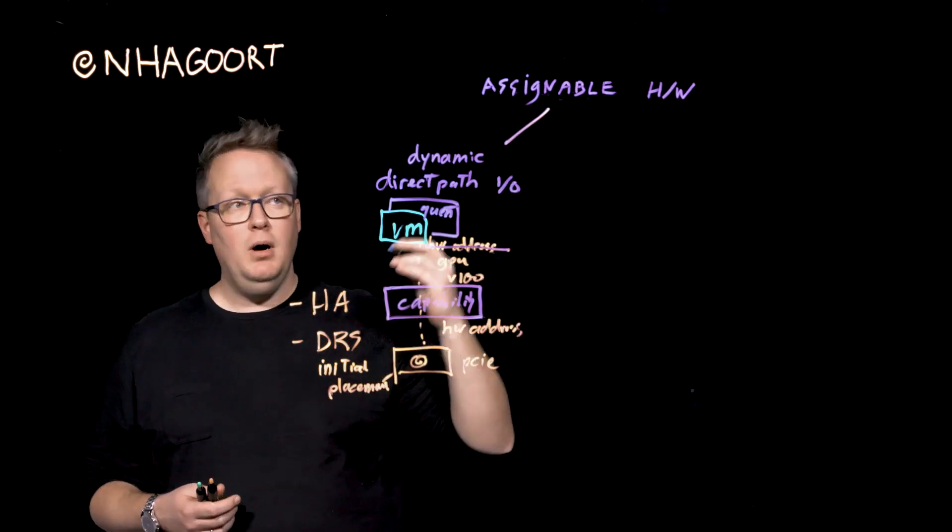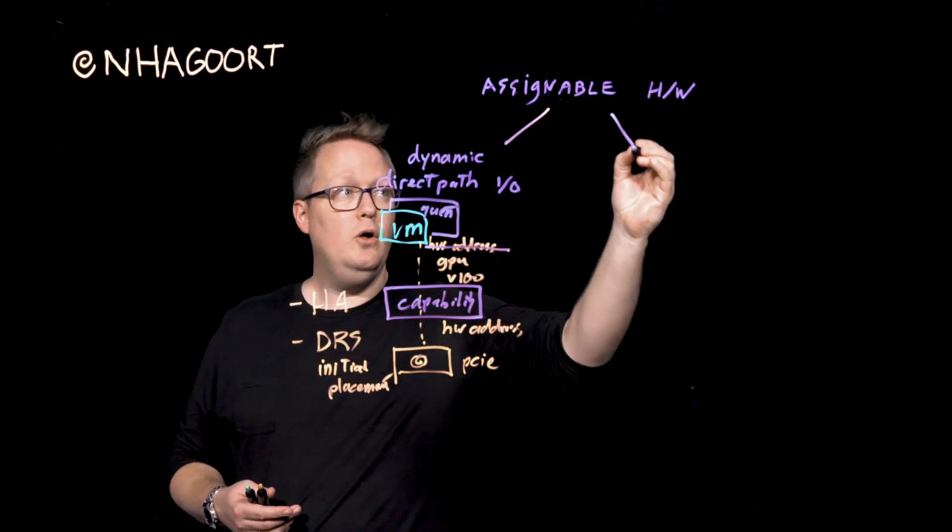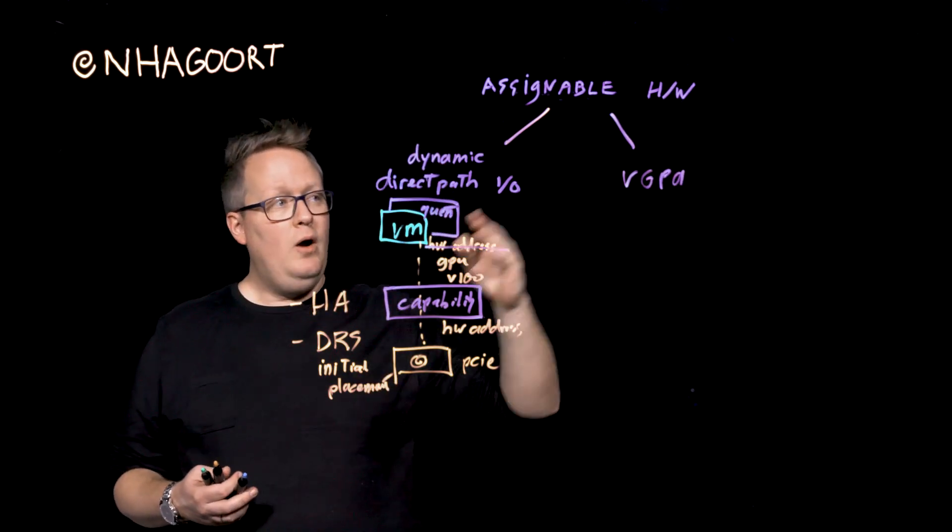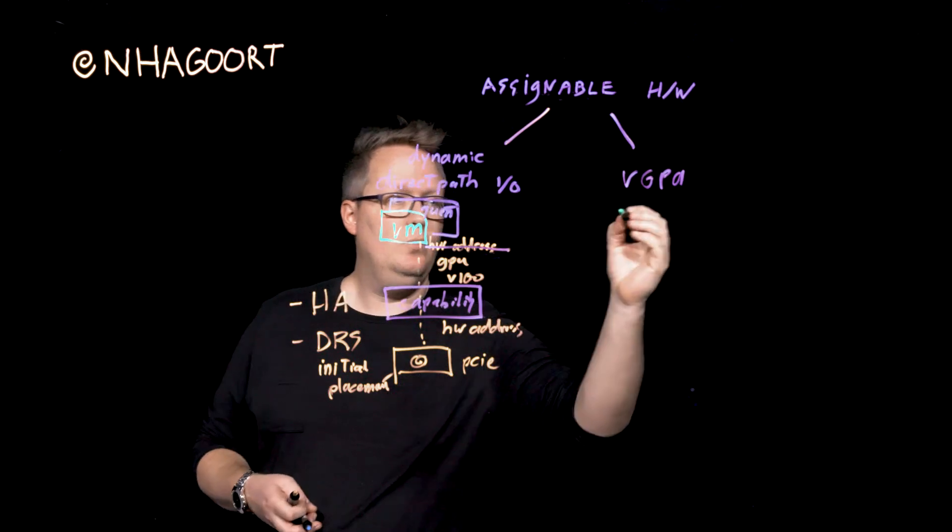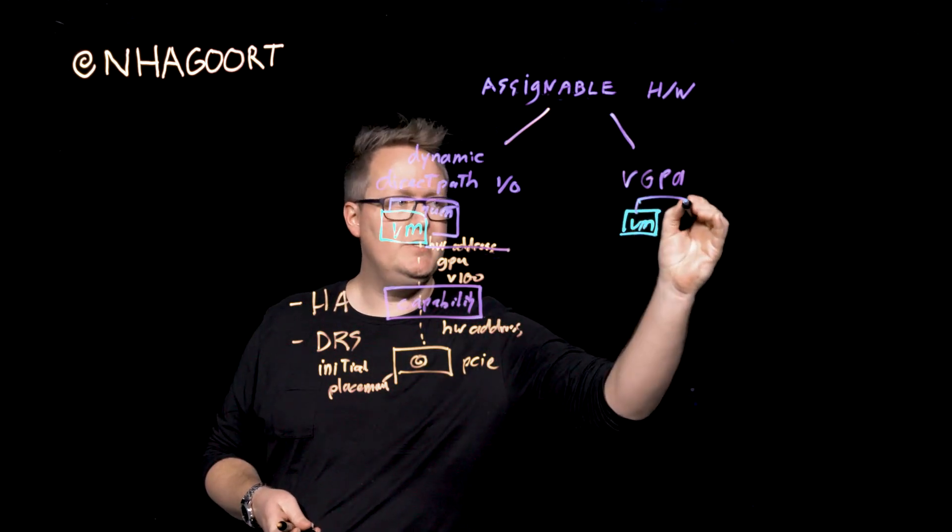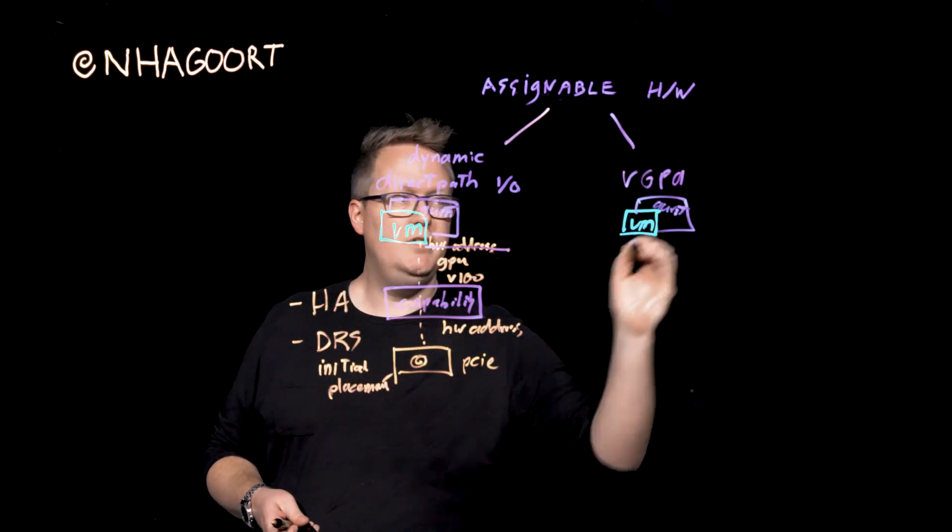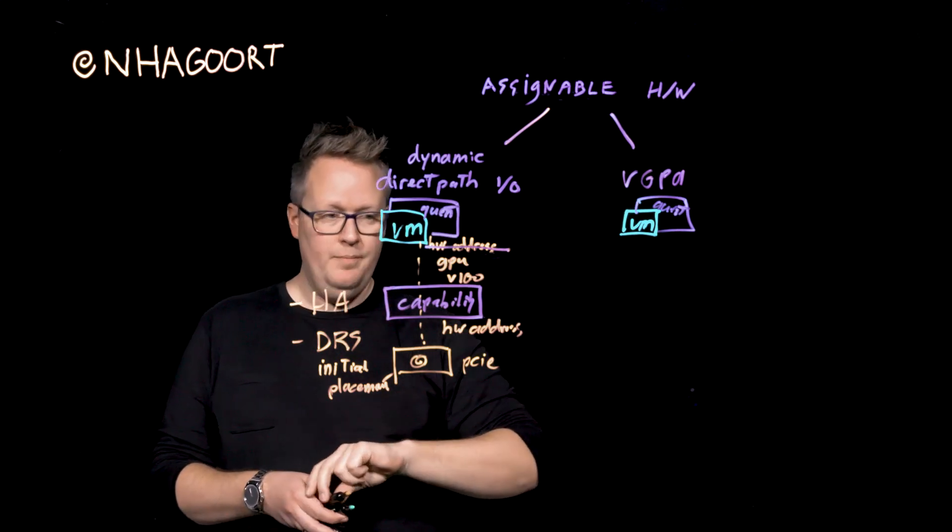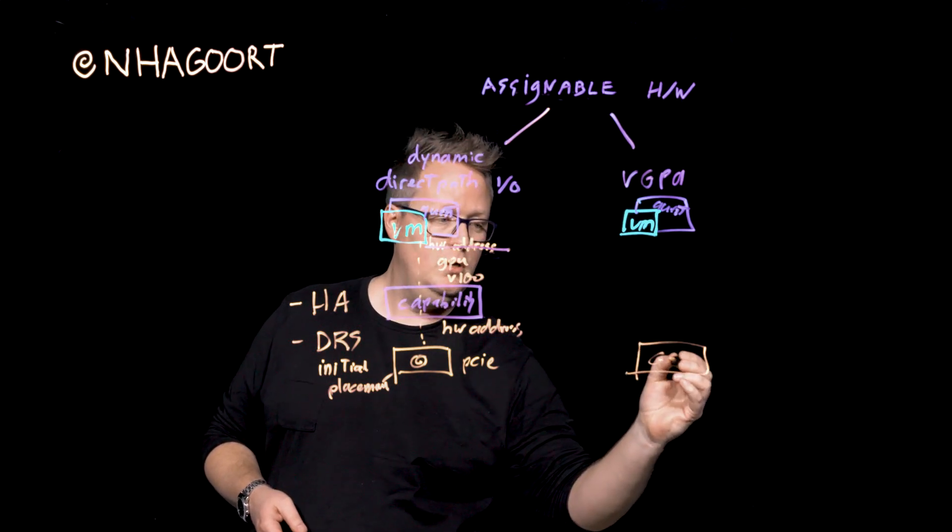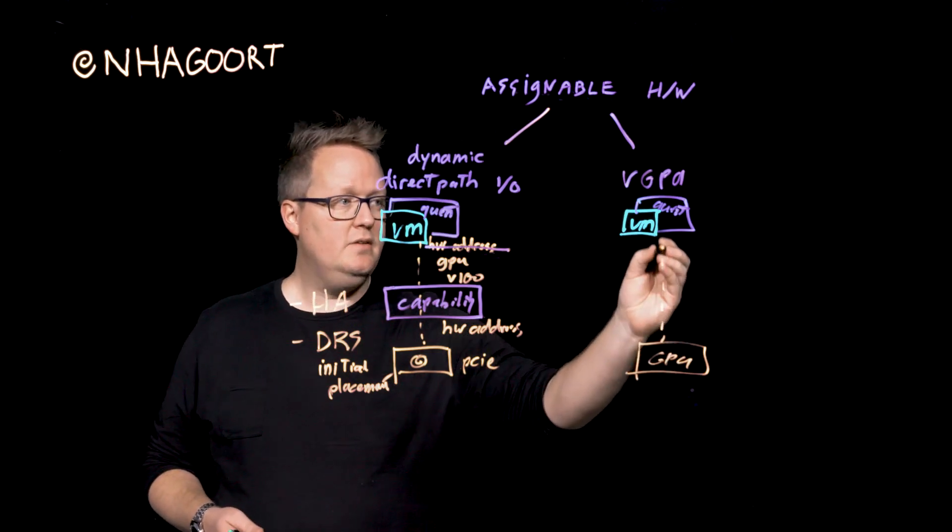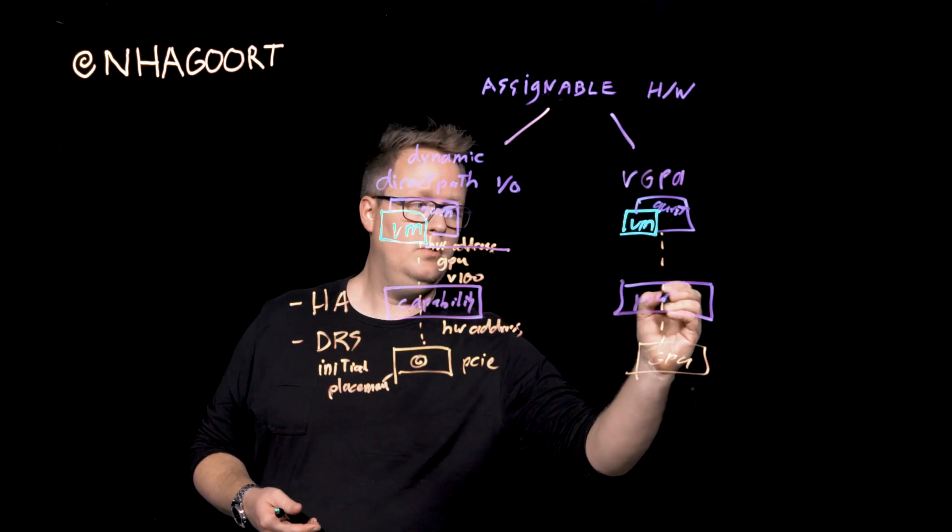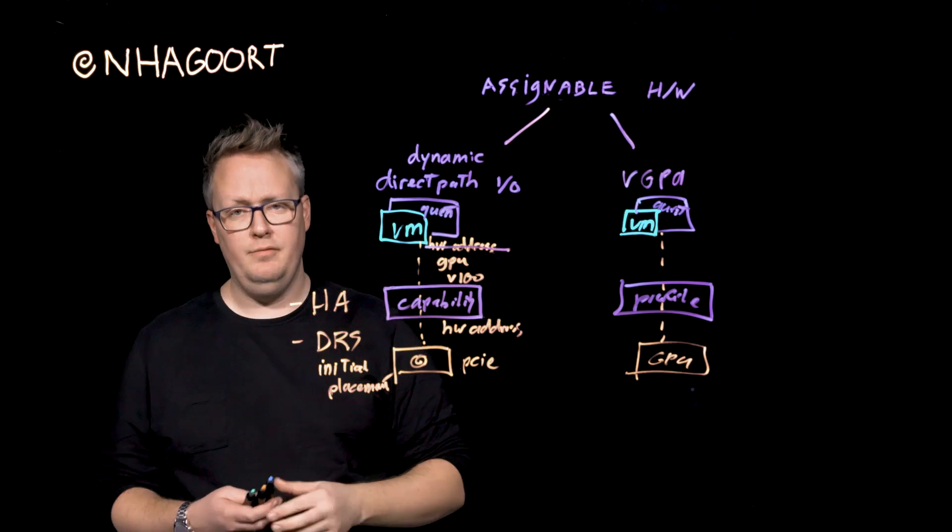So that is great news, but this is only about direct path IO. We also have the support for NVIDIA vGPU. Now, basically the same is going on. We have a virtual machine with a guest, and we have some other prerequisites as well for using NVIDIA vGPU. But basically, we are now having a PCIe device, which is obviously a vGPU-capable GPU device, which is connected. And the same capability mapping will now look for a specific profile, an NVIDIA vGPU profile.